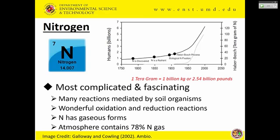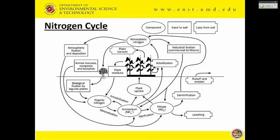Nitrogen is one of the most fascinating nutrients. As a researcher, it's interesting because it keeps going in one direction or another — there are many reactions that happen in the soil, most mediated by soil organisms, and it changes from one form to another. Nitrogen is the only element among the big three that also has a gas form. In the atmosphere, 78 percent of nitrogen exists as a gas, which is why the Haber-Bosch process was discovered.